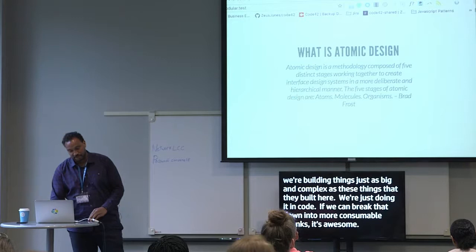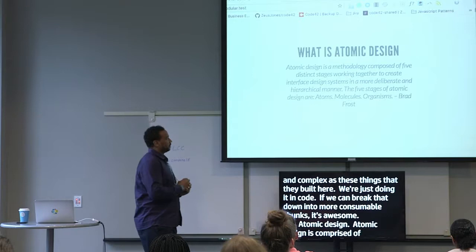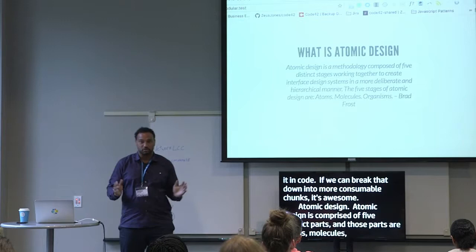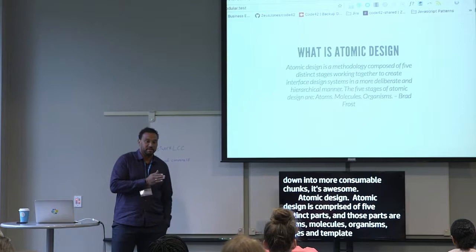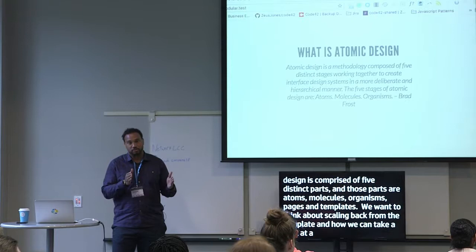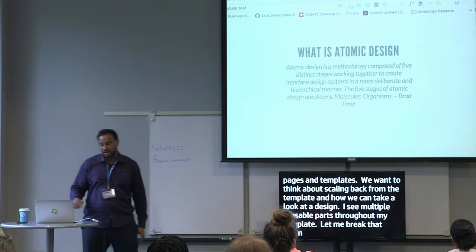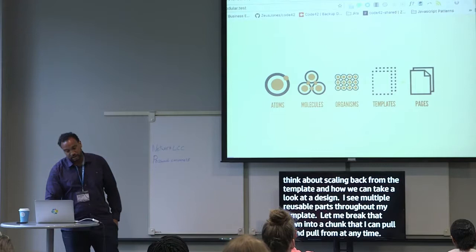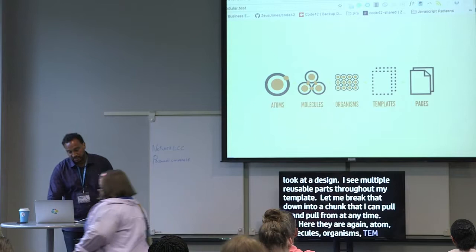Atomic design is comprised of five distinct parts: atoms, molecules, organisms, templates, and pages. Templates we're all familiar with as WordPress developers. But we want to start thinking about scaling back from the template and how we can look at a design and say, 'I see multiple reusable parts throughout my template — let me break that down into a chunk that I can pull in and pull from at any time.' Here they are again: atoms, molecules, organisms, templates, and pages.